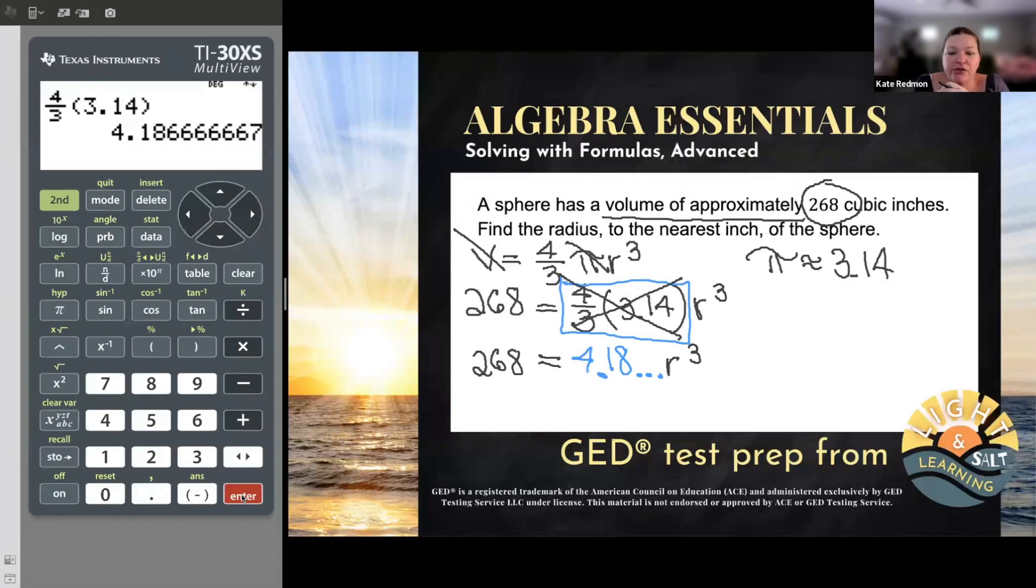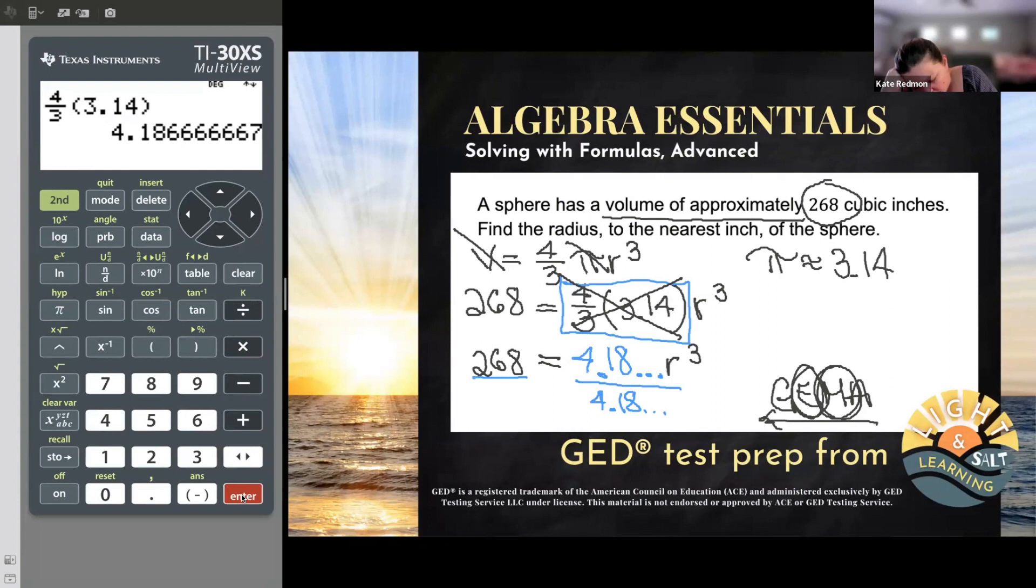Now there's no more simplifying I can do guys. Don't try to cube 4.18. That cube there is only on the R. Okay. The 4.18 is multiplying with that entire r³. So that being said, it's time to start solving, time to start getting R alone by itself. And when we're solving, we actually work that order of operations backwards. So we're going to get rid of that multiplier before the exponent. So let's get rid of that multiplier. Now, how am I going to get rid of a multiplier? I'll divide it. So we're going to divide away that 4.18, yada, yada, yada. And again, you don't have to write the little dot, dot, dot. I'm just doing that for you to know that even though I didn't write it down, I'm going to keep all that dot, dot, dot in my calculator.